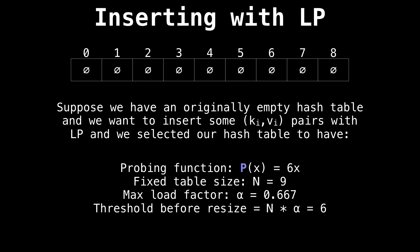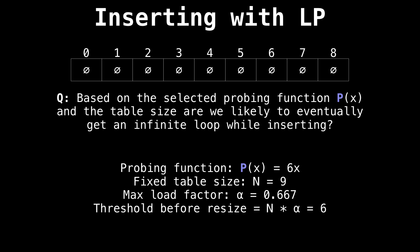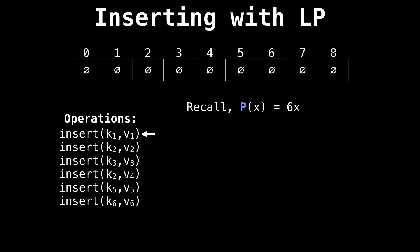Here's an example with linear probing. Suppose we have an originally empty hash table and we want to insert some key value pairs. We selected our probing function to be P(x) equals 6x and our table size to be N equals nine. We also selected a max load factor of alpha equals about two thirds, and the threshold will then be six. So we resize once we hit six elements. Based on the probing function we chose and the table size, are we likely to run into an infinite loop? The answer is yes, the greatest common denominator of nine and six is equal to three, which is not one.